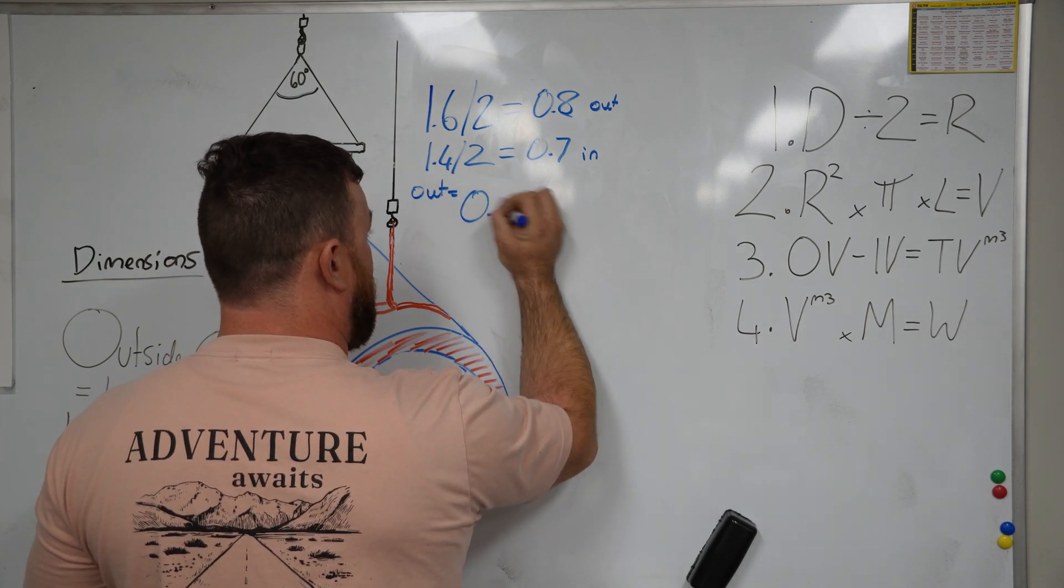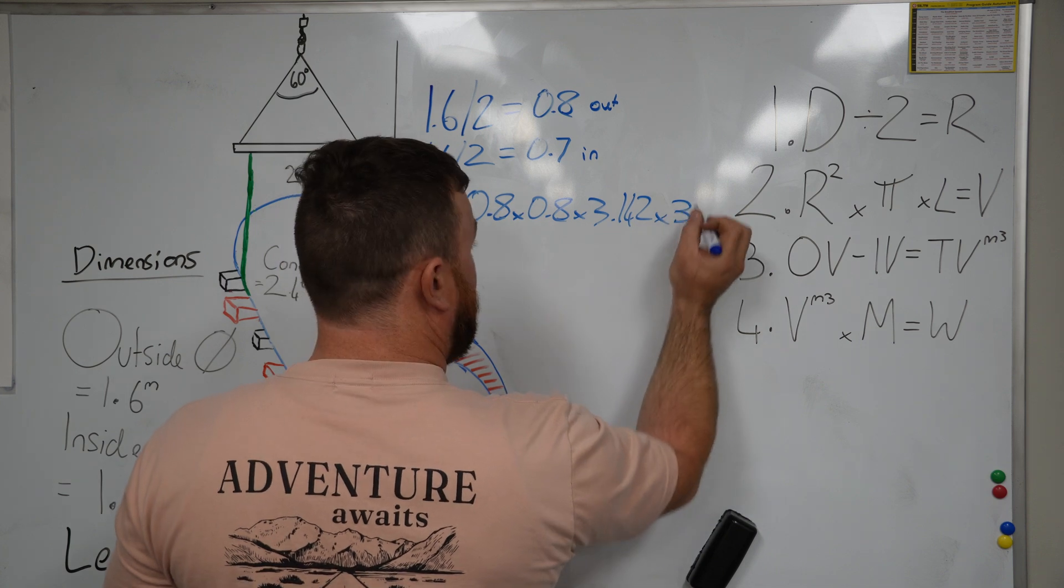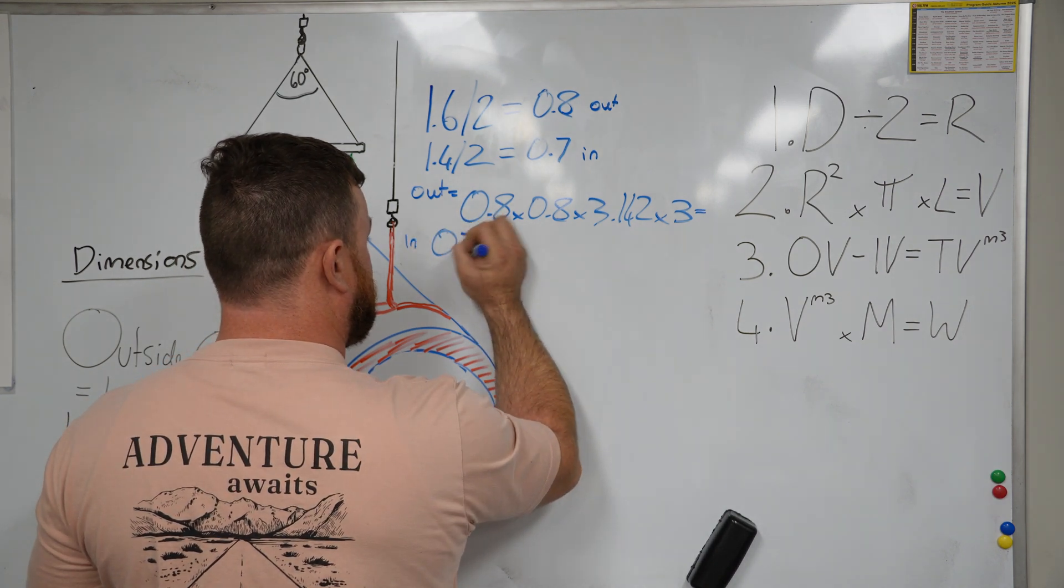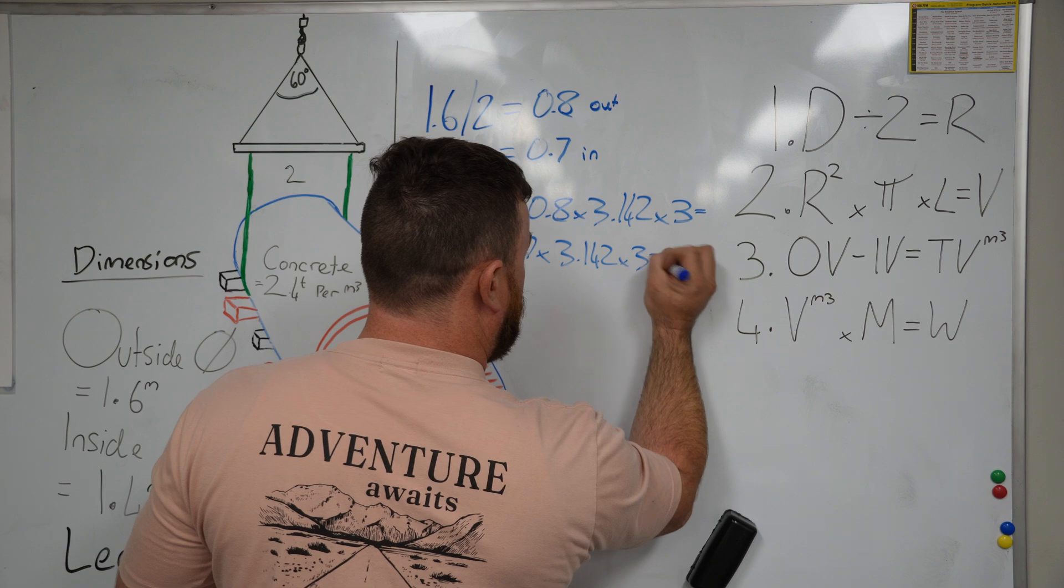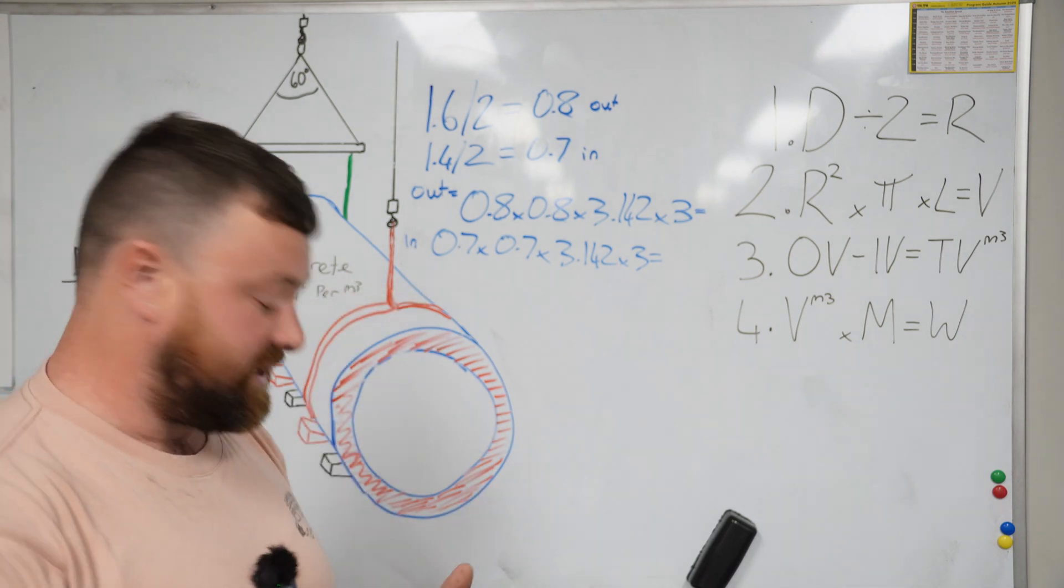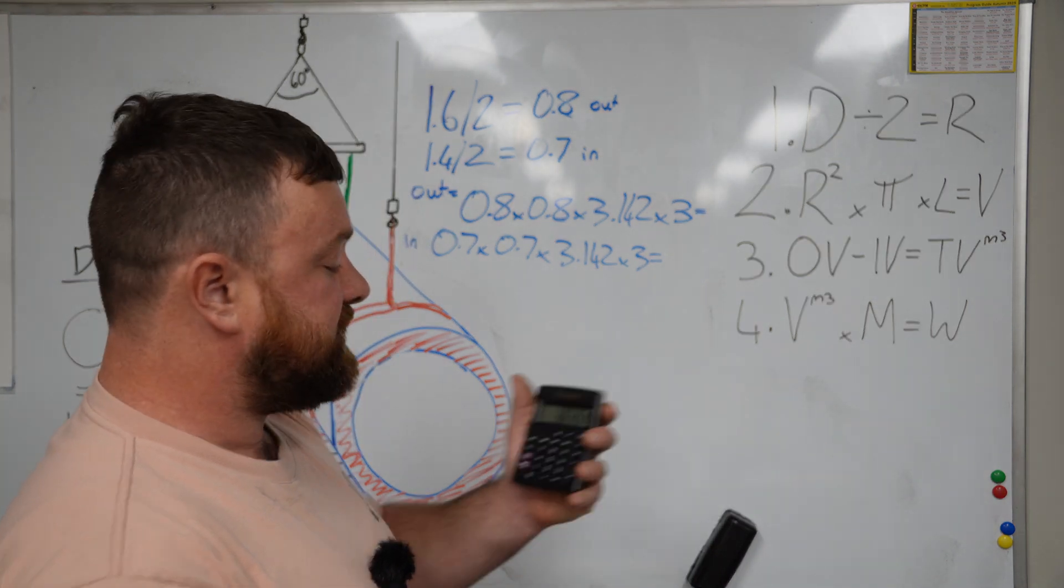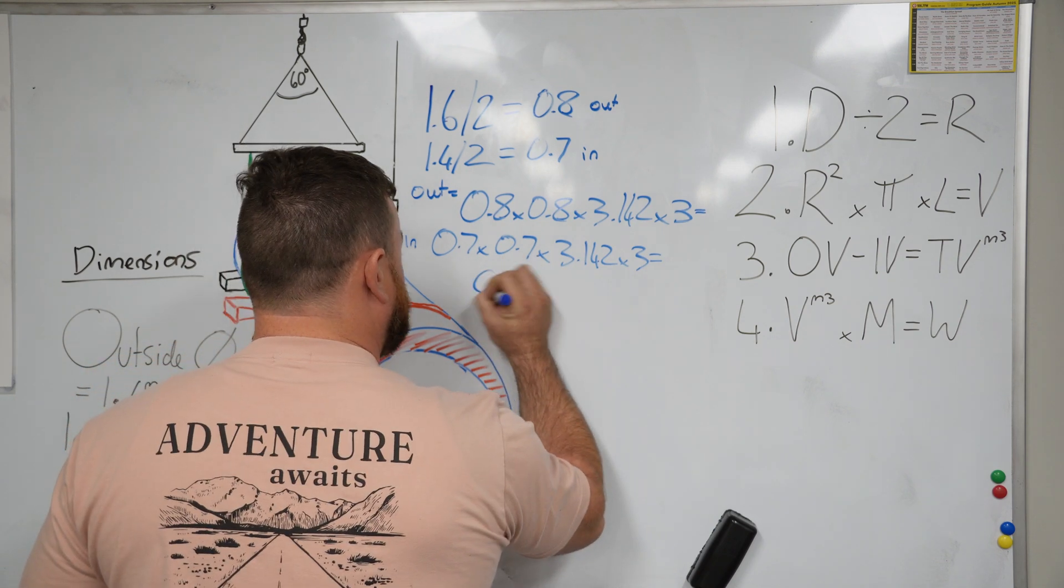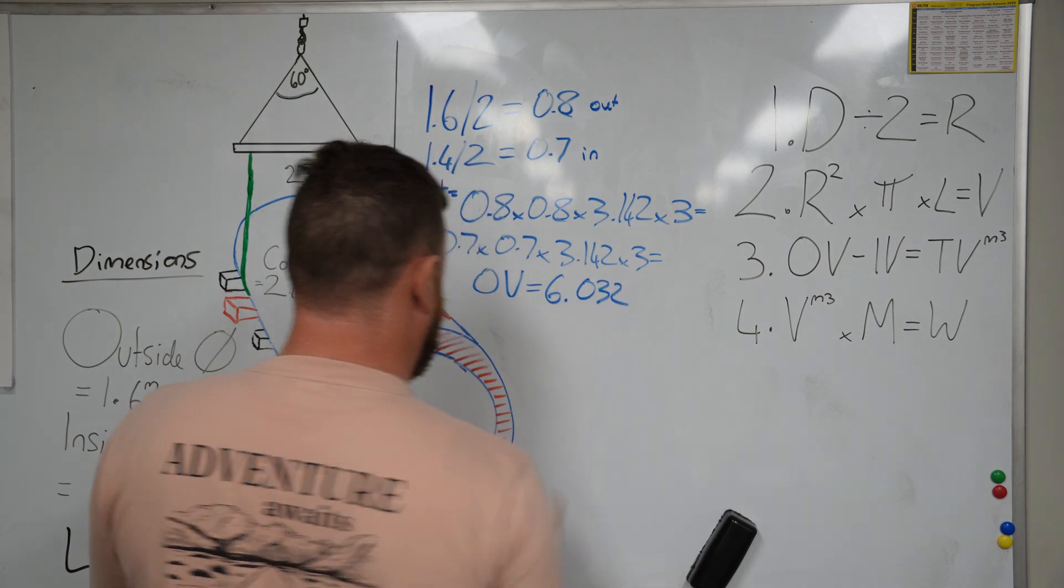First of all, I'll start with the outside: 0.8 times 0.8 times 3.142 times 3 for our length is going to give us our outside volume. Now you're going to enter it into the calculator the exact same way we've done this. Don't press the equals button until you've put four sets of numbers in. So 0.8 times 0.8 times 3.142 times 3 equals 6.032. Let's just say it's 6.032—don't round any of these numbers. Outside volume equals 6.032.